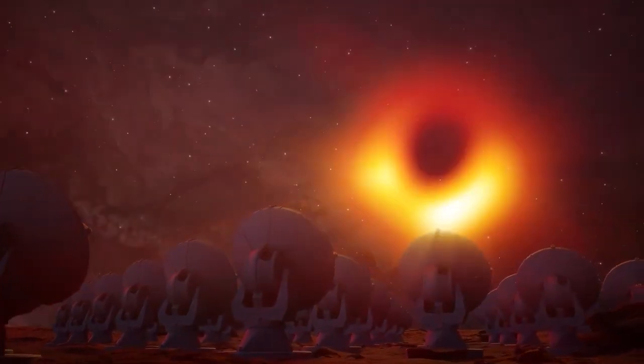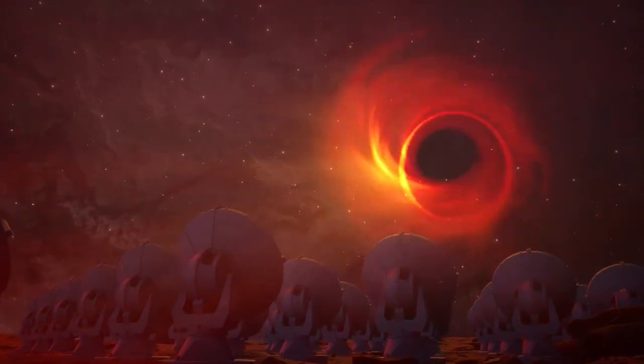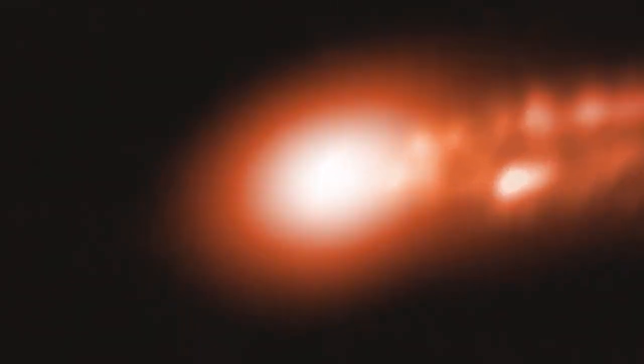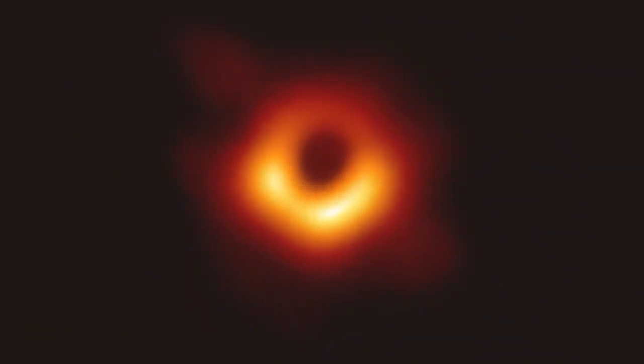The Event Horizon Telescope has taken a historic first image of our galaxy's supermassive black hole. The image, captured in the light of sub-millimeter radio waves, reveals the existence of a black hole in the center of the Milky Way, which feeds on a trickle of hydrogen gas.